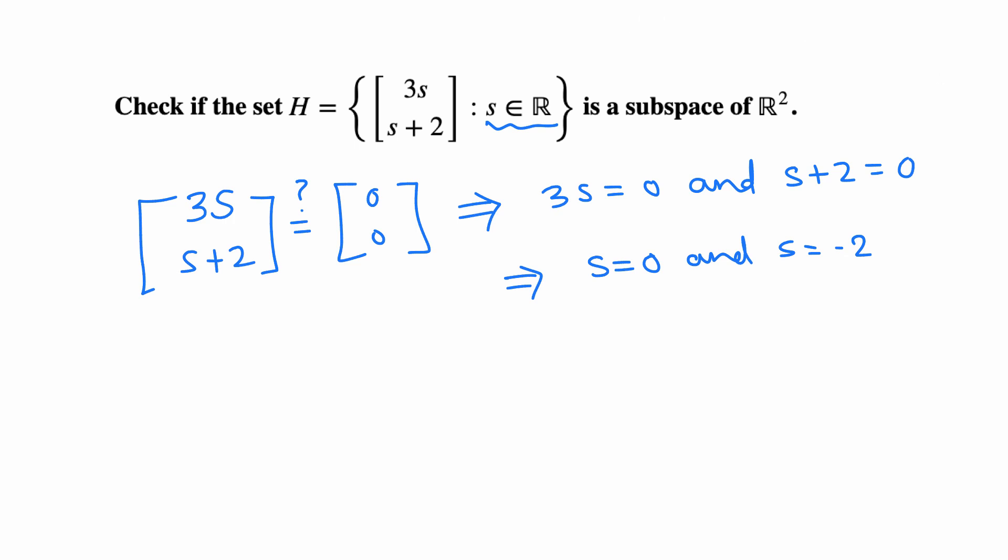So we should have s = 0 and s = -2 simultaneously—that's not true, that's false. We cannot have that at the same time. That means the answer is no. This collection H is not a subspace of R2 because the zero vector is not in this collection.